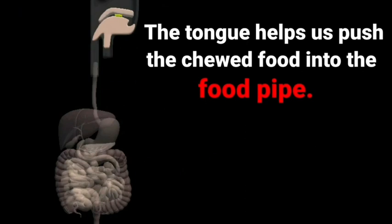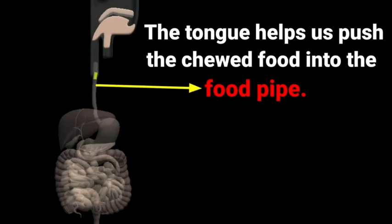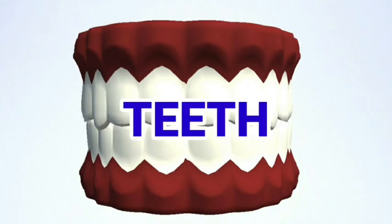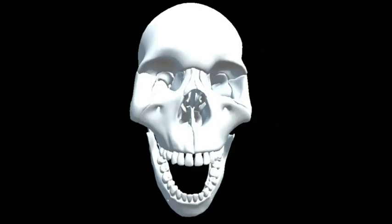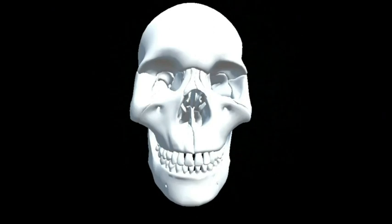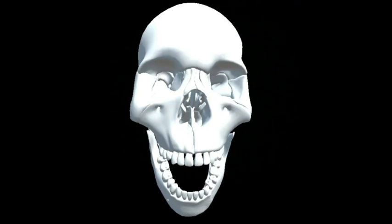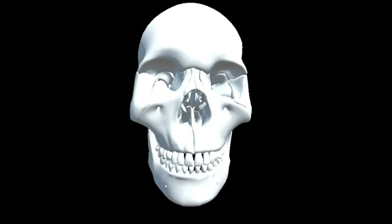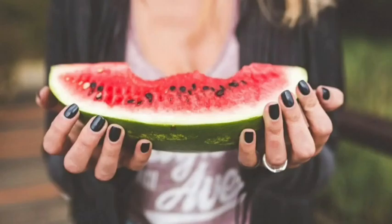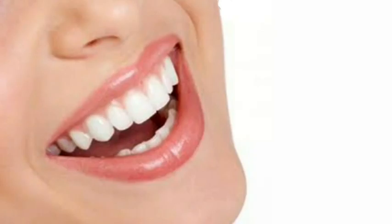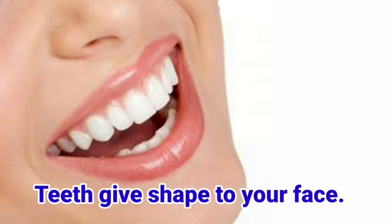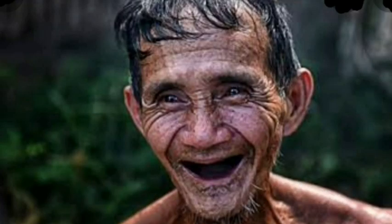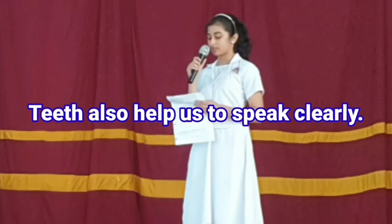The tongue helps us push food into the food pipe. It also helps us to speak clearly. When we eat food, we use some teeth to bite, some to tear the food and other teeth to chew it. We use another set of teeth to grind the food to paste so that we can swallow it easily. Teeth also give shape to your face. That is why an old person with no teeth has sunken cheeks.